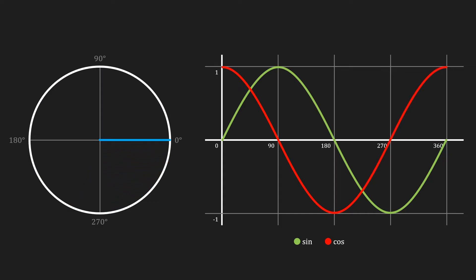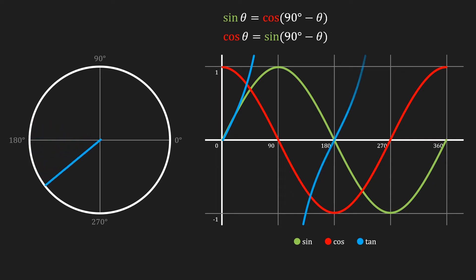You might have noticed that the cosine has a similar graph to the sine. In fact it is exactly the same, just offset by 90 degrees. Therefore we can say that the cosine of theta is equal to the sine of 90 degrees minus theta. Similarly, the sine of theta is equal to the cosine of 90 degrees minus theta. The tangent function has a range from negative infinity to positive infinity. An alternative way to calculate the tangent of theta is to say that it is equal to the sine of theta divided by the cosine of theta.